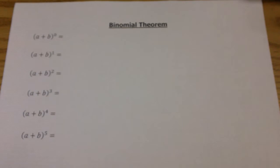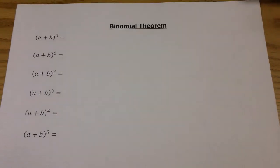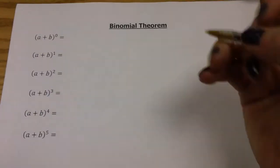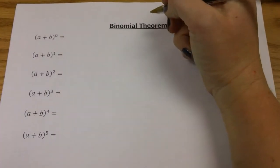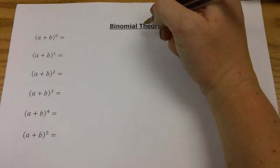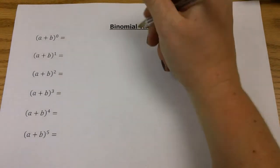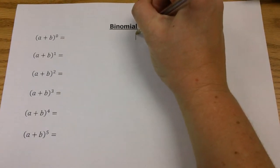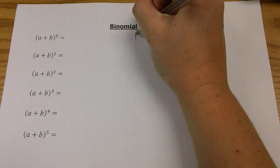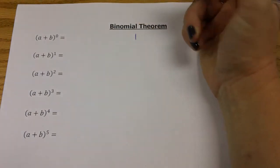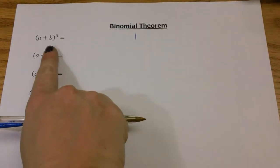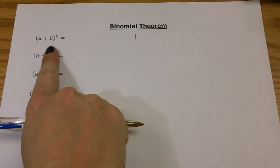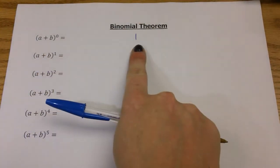If we have a to the zero, we know that a to the zero is one, because anything to the zero power is going to be one. When I write this, I'm going to write it kind of in the middle of the paper — there's a reason why you'll see in a minute — but for now, a plus b to the zero is one.